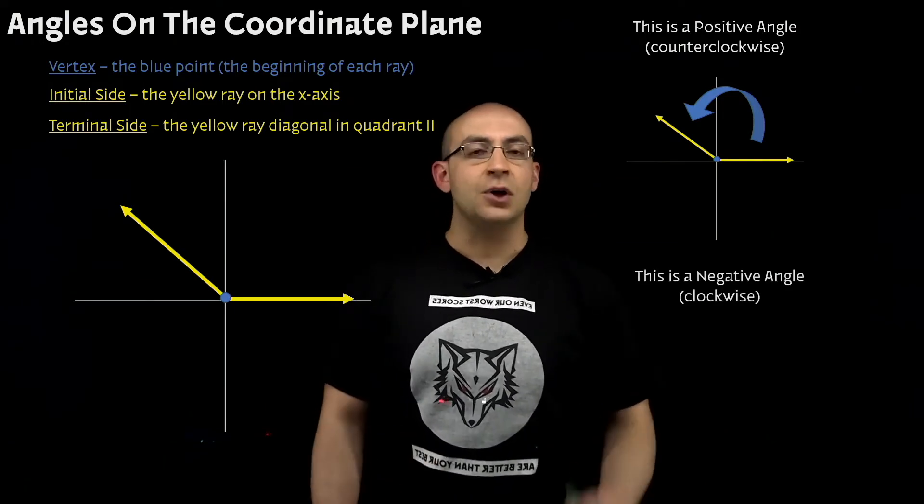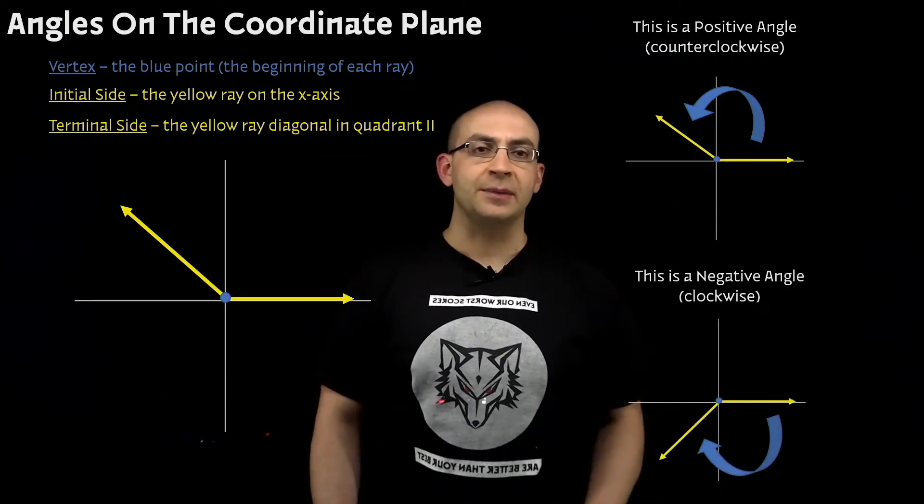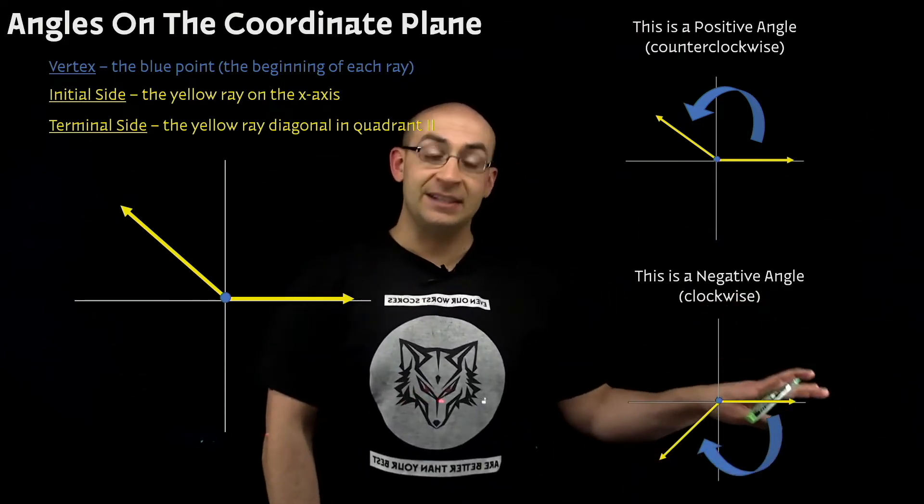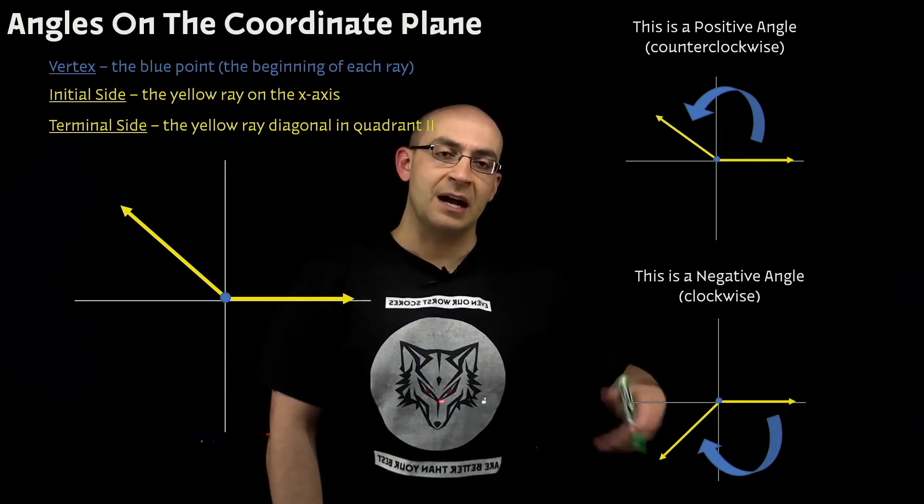Negative angles, though, go clockwise from the initial side. Take a look at the drawing below. The initial side is still on the x-axis, but if I have a negative angle, it's going to go clockwise around.